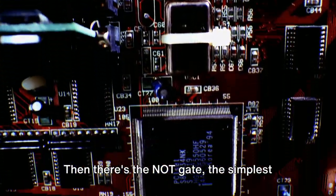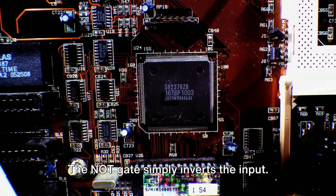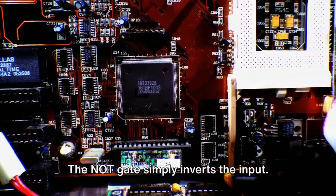Then there's the NOT gate, the simplest of all logic gates. It only has one input and one output. The NOT gate simply inverts the input. If the input is true, the output is false, and vice versa.